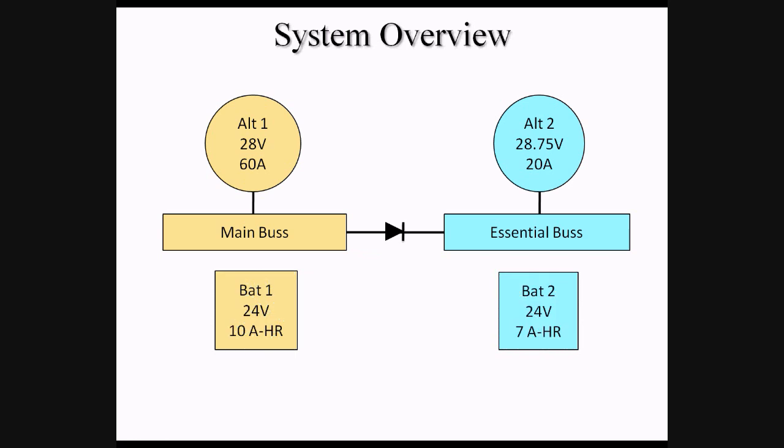The final components of the electrical system are two batteries, Bat-1 and Bat-2. These batteries provide electrical power before the engine is started and provide emergency power in flight in the event one or both alternators were to fail. The important ratings for the batteries are voltage and their amp-hour rating. The amp-hour rating of a battery indicates how much capacity it has.